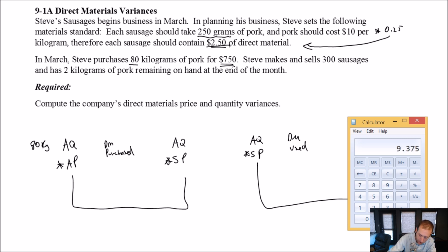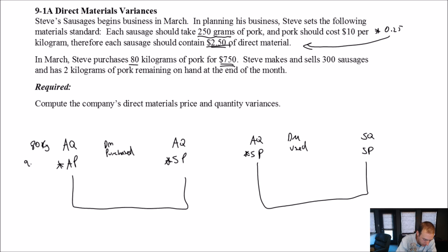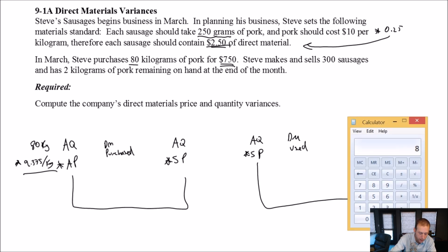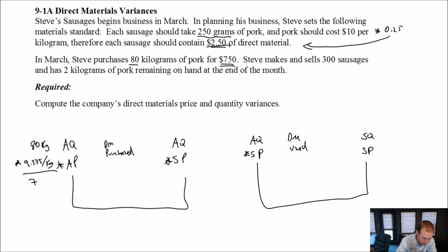So let's do some quick math. $750 divided by 80, he paid $9.375 per kilogram. So again, the AP is the actual price per kilogram.